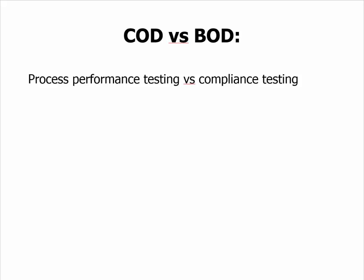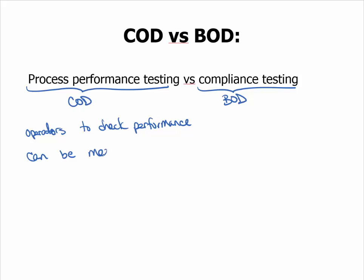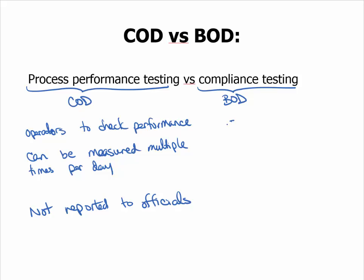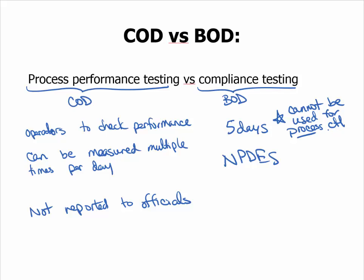There is a learning objective that asks you to compare COD versus BOD. COD is used for process performance testing and BOD is used for compliance testing. Process performance testing is utilized by operators to check performance — it can be measured multiple times a day and is not reported to officials. BOD is measured over five days and is required by the NPDES permit. Because it takes five days, it is not useful for process control, since operators need to respond to mistakes within the process more often than every five days. The COD test, in contrast, takes 2.5 hours.